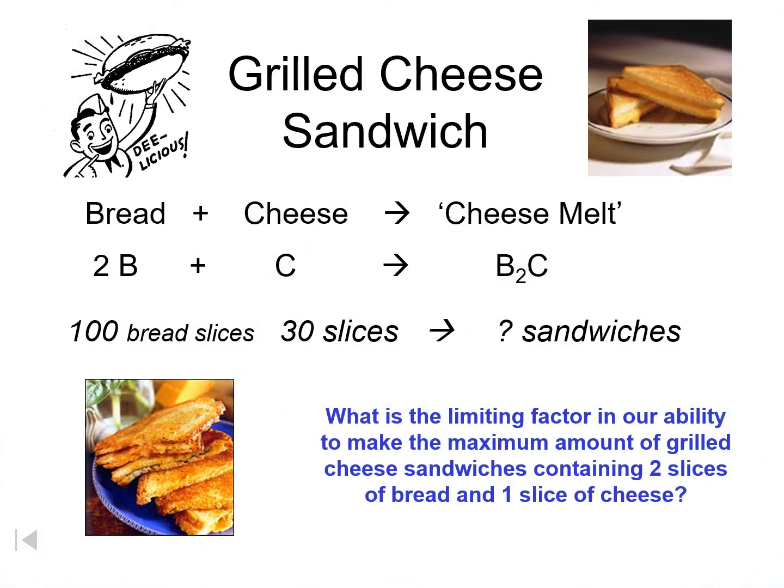Let us consider first this situation where we prepare grilled cheese sandwich. It involves two bread slices, one cheese slice to make one sandwich. Now, if there are 100 bread slices and 30 cheese slices, how many sandwiches can you prepare? What is the limiting factor in our ability to make the maximum amount of grilled cheese sandwiches containing two slices of bread and one slice of cheese? Ilang sandwiches ba?